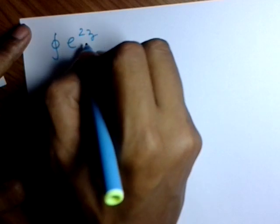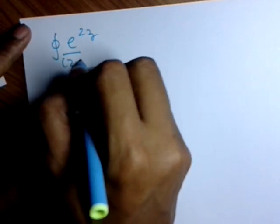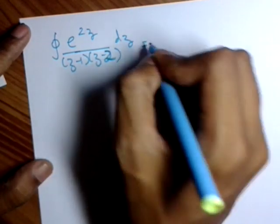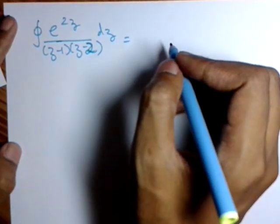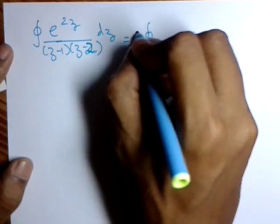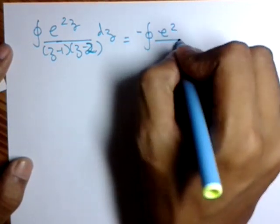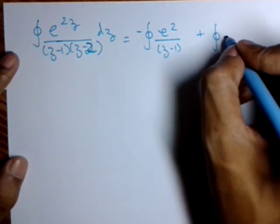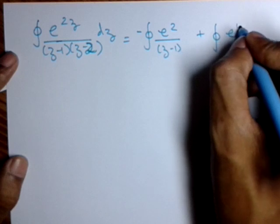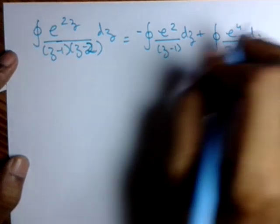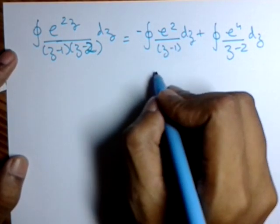Integration of e raised to 2z upon (z minus 1)(z minus 2) dz is equal to integration of minus e squared (that is A) upon (z minus 1) plus integration of B upon (z minus 2), that is e raised to 4 upon (z minus 2) dz.